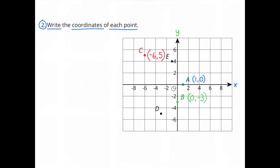C is located directly above negative 6 on the x-axis, so it moved 6 spaces to the left, and then moved up exactly between 4 and 6, which would be 5. So 6 to the left along the x-axis is negative 6, and 5 up along the y-axis is positive 5. The coordinates for C are negative 6 and positive 5. D: start at the origin, move 3 units to the left along the x-axis and 5 units down along the y-axis. The coordinates are negative 3 and negative 5. The point for E is 1 unit to the left for negative 1, and 4 units up the y-axis at 4. Coordinates: negative 1 and positive 4.